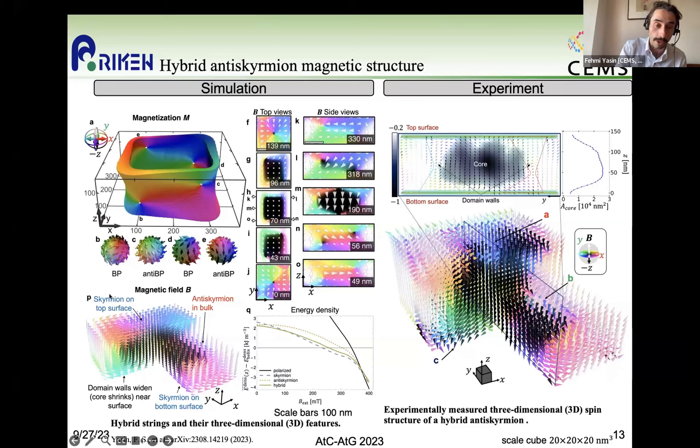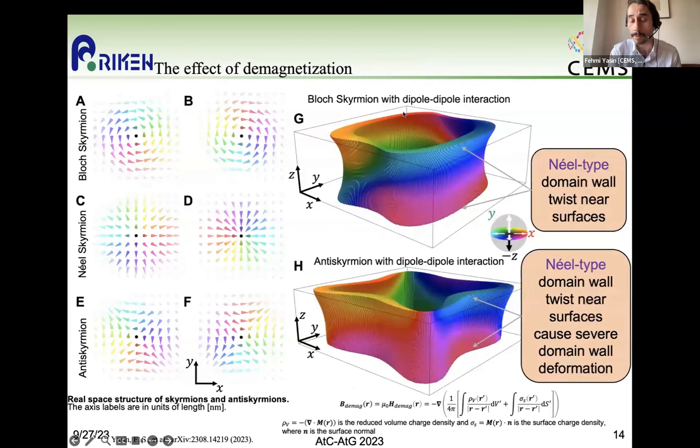So this really is, or at least the micromagnetic simulations seem to agree with our experiment, including, for example, this three-dimensional vector field distribution of the magnetic field, which actually matches quite well our experimentally measured vector fields here on the right-hand side. And we also found that this core of the spin texture of these hybrid strings decreases near the surface with a corresponding increasing of the domain wall width. And this is due to the effect of demagnetization.